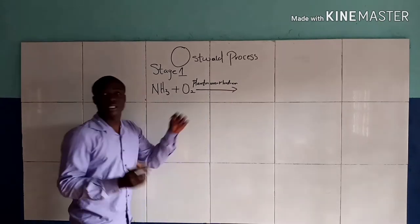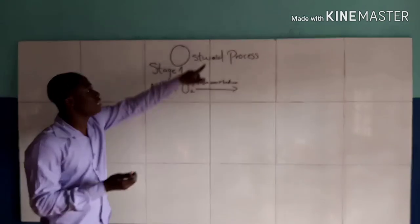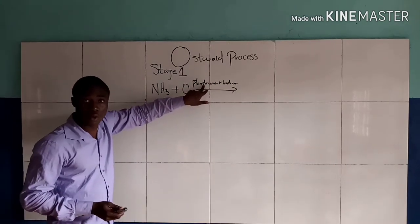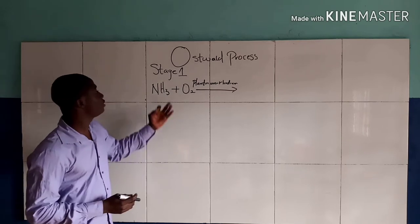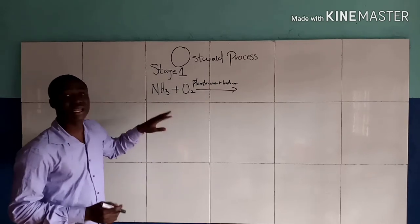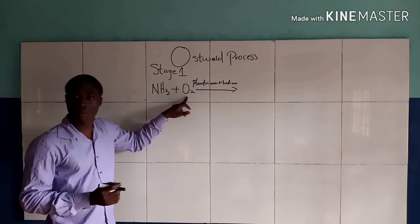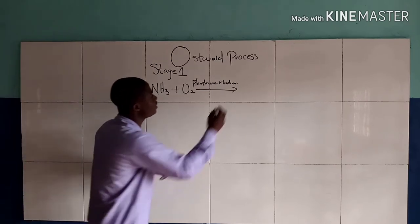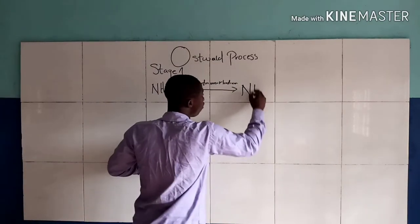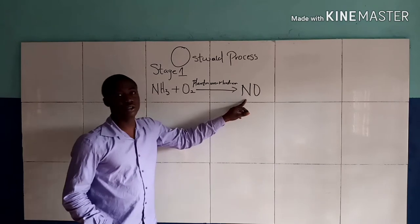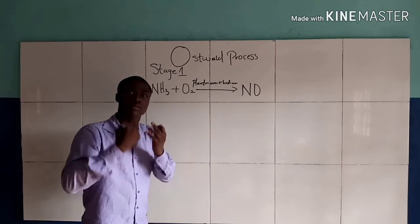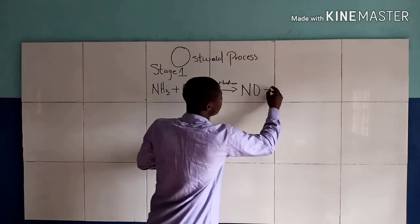Now, the catalyst used in the Ostwald process is called platinum rhodium. Now, the product we are going to get when ammonia reacts with a molecule of oxygen is NO, that is nitrogen 2-oxide or nitrogen monoxide and water.